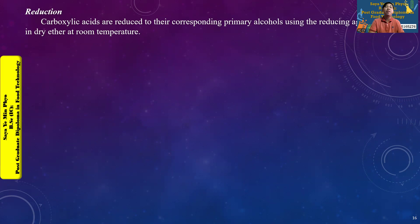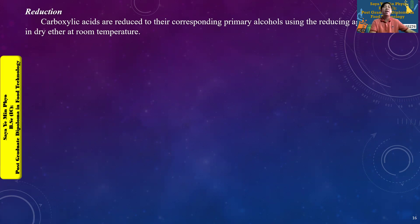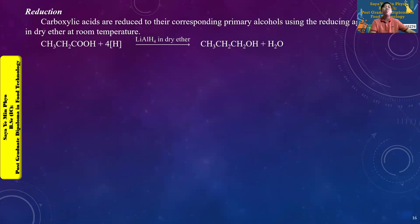Carboxylic acids can be reduced using a reducing agent. The reducing agent used is LiAlH4. If hydrogen is present, the LiAlH4 acts as the hydride source.